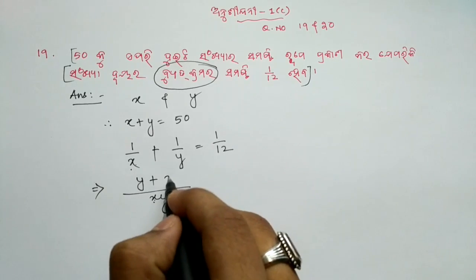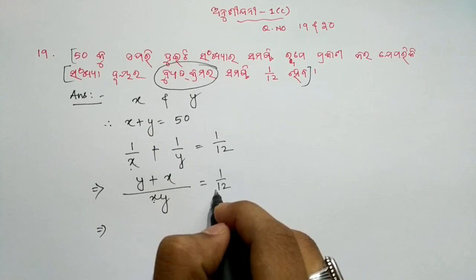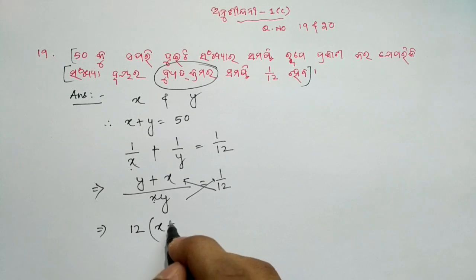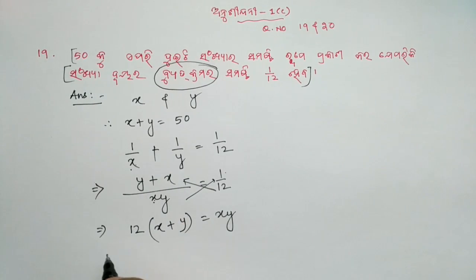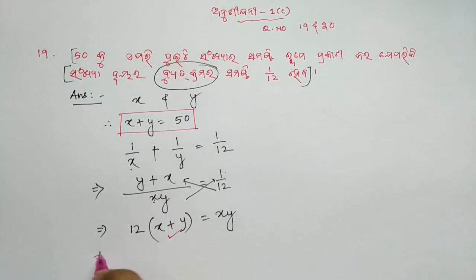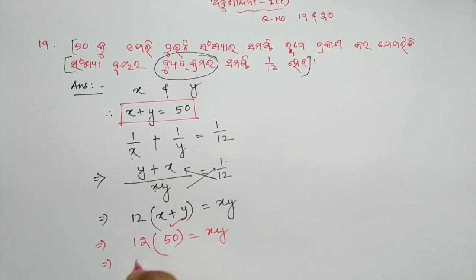x is equal to 1 by 12, so we have cross multiplication: 12 into y plus x, x plus y is equal to xy. So if xy is equal to xy, x plus y is equal to 50.